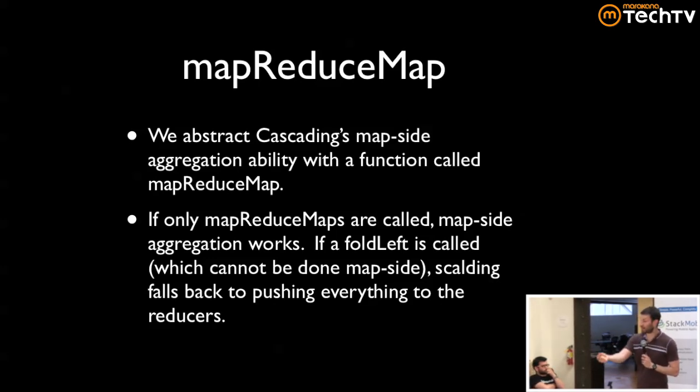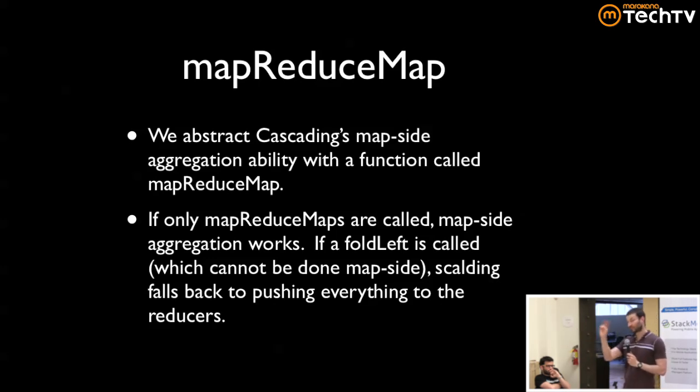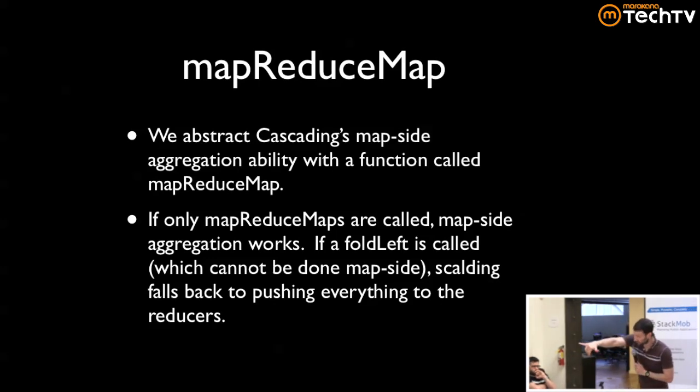What's an example? For size, average, and standard deviation: the setup maps y to its zeroth, first, and second powers (1, y, y²). The normal reduce sums them all up. Then the cleanup takes those three numbers — count, sum of y, sum of y² — and from those you can compute the mean (sum/count) and standard deviation. That idea of set up, then reduce, then clean up is very powerful — almost everything in Scalding is implemented this way.